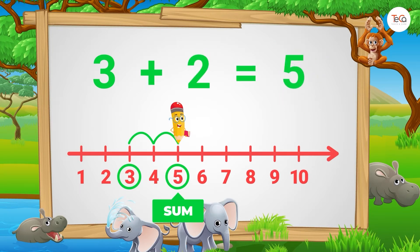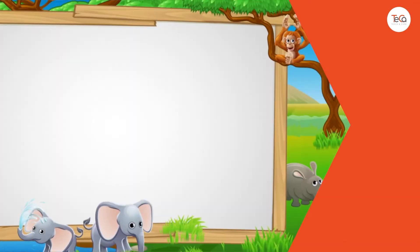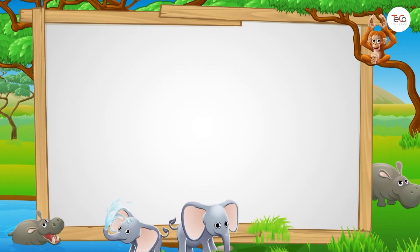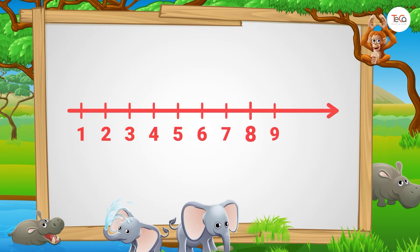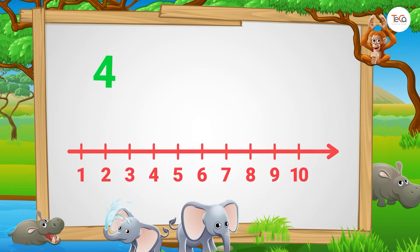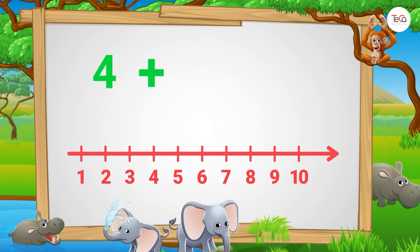3 plus 2 equals 5. Easy peasy! Now, use the number line to help me find 4 plus 5.